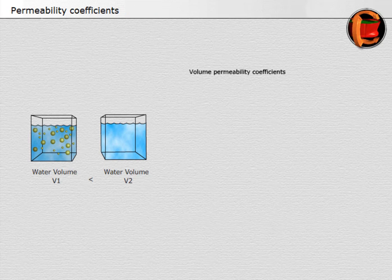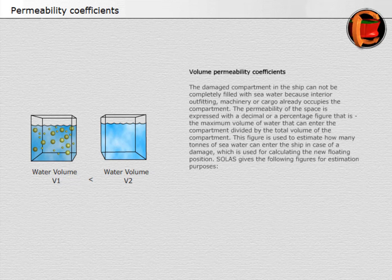Volume permeability coefficients: the damaged compartment in the ship cannot be completely filled with sea water because interior outfitting, machinery, or cargo already occupies the compartment. The permeability of the space is expressed as a decimal or percentage figure — that is, the maximum volume of water that can enter the compartment divided by the total volume of the compartment. This figure is used to estimate how many tons of sea water can enter the ship in case of damage, which is used for calculating the new floating position.